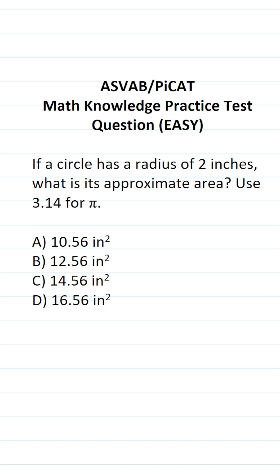This math knowledge practice test question for the ASVAB and PiCAT says, if a circle has a radius of 2 inches, what is its approximate area? Use 3.14 for pi.